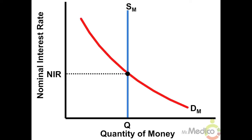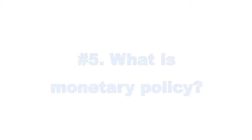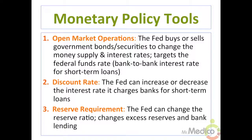As interest rates increase, businesses and households have less incentive to borrow from banks. Less borrowing leads to less investment spending and consumer spending. When interest rates are high, the opportunity cost of holding money is high — there is more incentive to save rather than to spend. Number five: what is monetary policy? The Federal Reserve is the central bank of the U.S. It has several tools of monetary policy that influence money supply and interest rates.